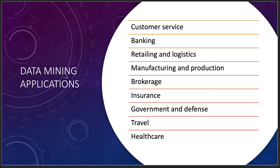Insurance is the same: how many people in a zip code have floods or fires? There's an entire actuarial table in insurance built on that, and data mining of actuarial tables is big — for life, house, car, and other insurance. It's all based on actuarial tables, easily data-mined down to zip code or even physical address. Brokerage uses predictive modeling for stock market prices, gold, silver, and oil. Retailing, logistics, and banking all have very specific data mining applications.